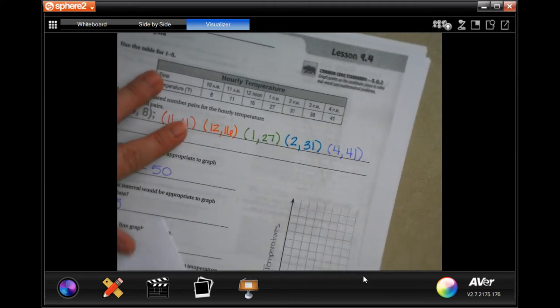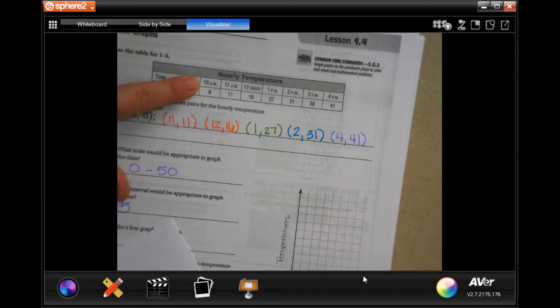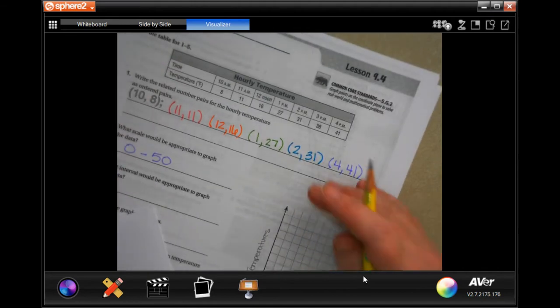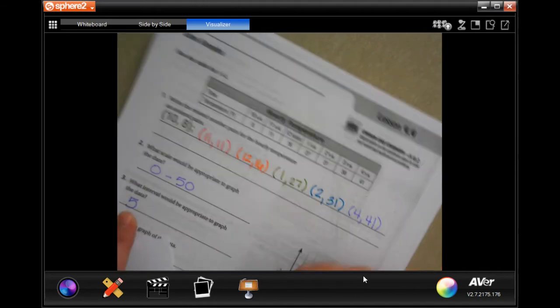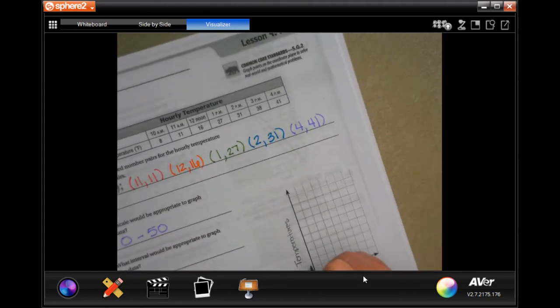So now I'm going to put my numbers in. For the time, I'm going to start with 10. I'm going to go 11, 12, 1, 2, 3, and 4.